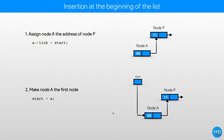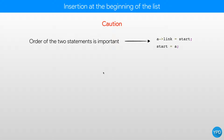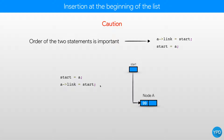The order of these statements is very, very important. If we write start equals to A first, start will point to node A. What was start pointing to previously? Node P — now that is lost. If we then write A arrow link equal to start, the link part of node A will point to itself because start is now pointing to node A. So reversing the order of the statements will create an infinite loop in your linked list. Keep in mind: whenever you are making start point to a new node, that statement has to be written last.